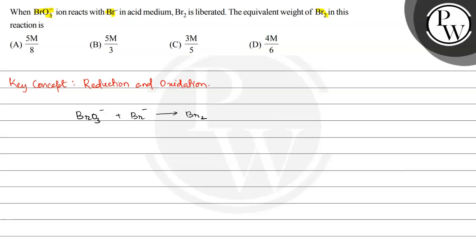BrO3- is present in its +5 oxidation state, Br- in -1 oxidation state, and Br2 in 0 oxidation state. From +5 to 0, it undergoes reduction, and from -1 to 0, it undergoes oxidation.